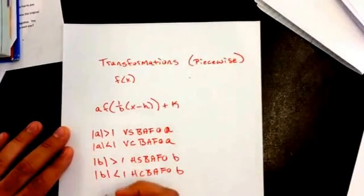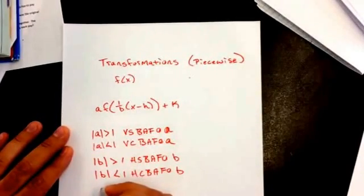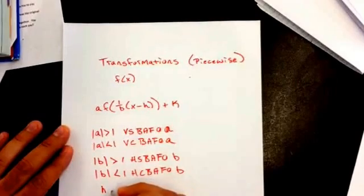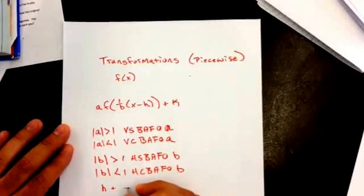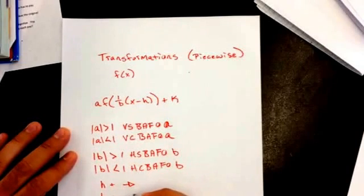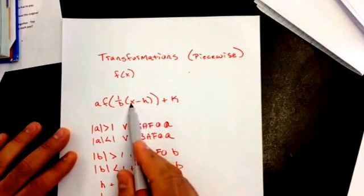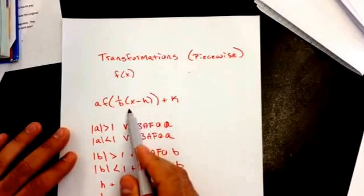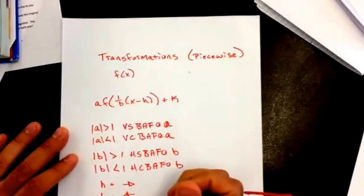h is going to move us to the left or to the right. So if h is positive, we're going to move to the right. If h is negative, we're going to move to the left. Remember that we're doing minus h, so if it says x minus 3, that's h value of 3, which means it moves to the right 3.